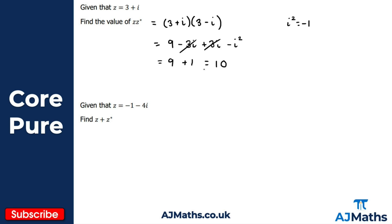Since i squared is minus one, minus i squared becomes minus minus one, which is plus one. So we get nine plus one equals ten. We can verify with the shortcut: for z = a + bi, the product z·z* equals a squared plus b squared, so three squared plus one squared equals nine plus one equals ten.